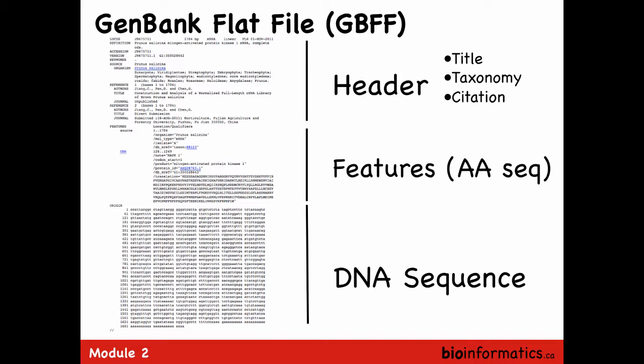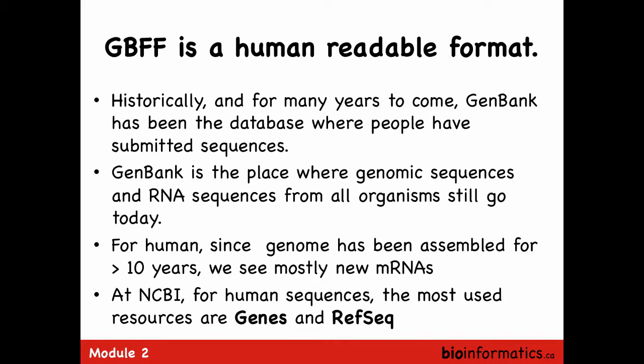Going back to GenBank and file formats — one of the biggest things you'll do in bioinformatics is converting file formats. The flat file is the initial file created within GenBank. It's divided into three parts: the header, the features, and the sequence. Most people scroll down to the sequence, but there's a lot of information in that file. It's the human-readable version of submitted data.